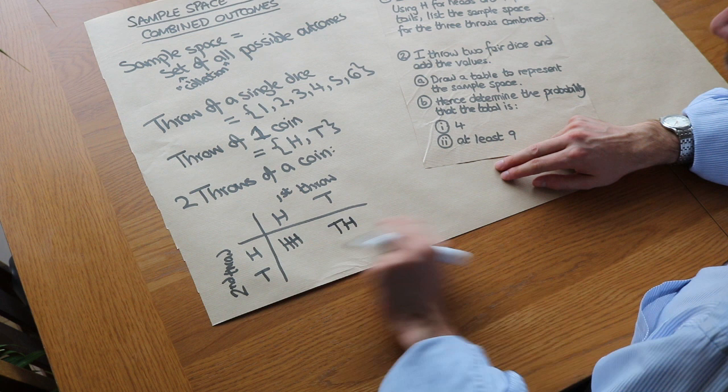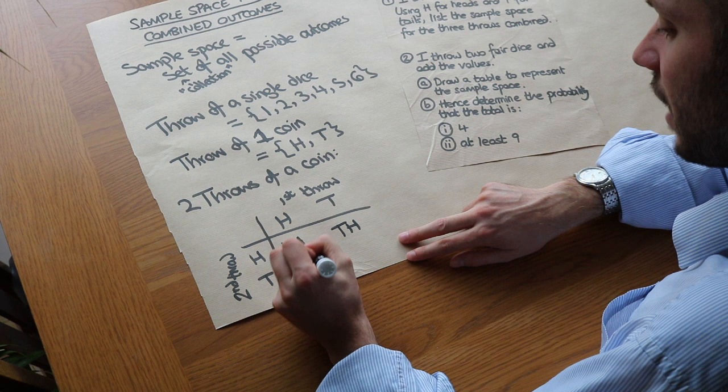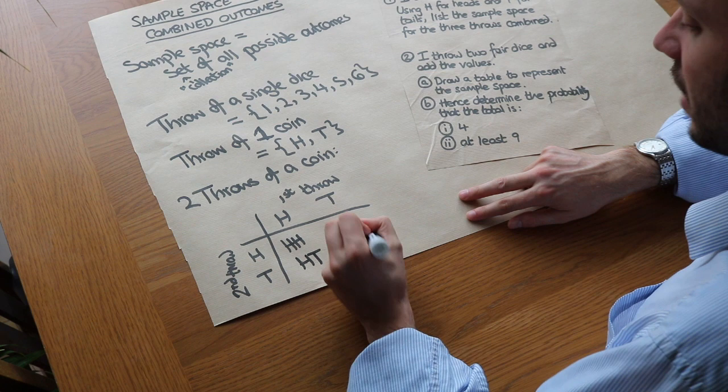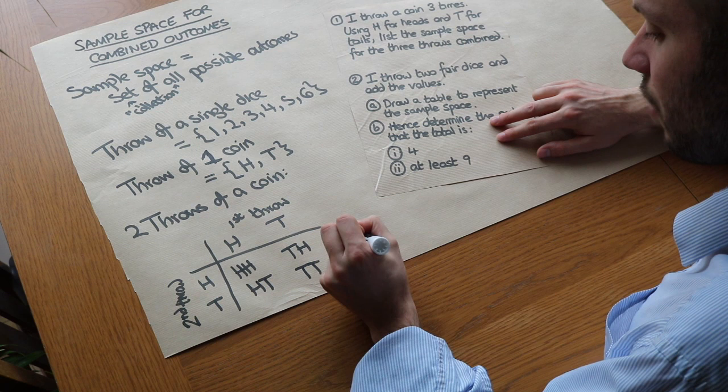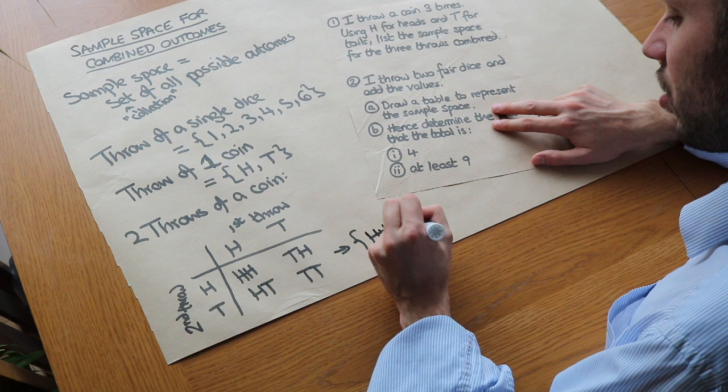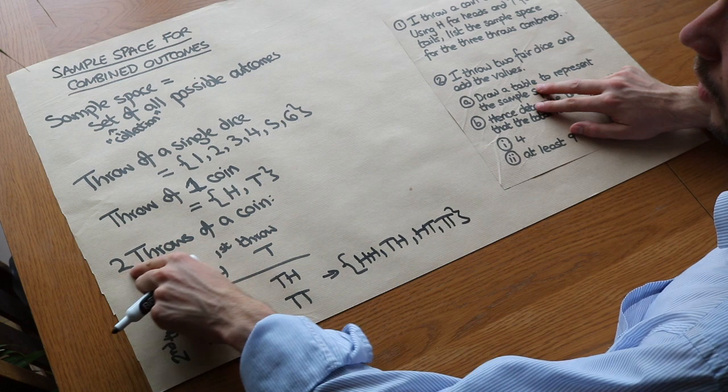This one similarly: first throw head, second throw tails, we could write that as HT. And finally if both the first and second throw were tails we could write that as TT to represent the combined outcome. But you could just write it as a single list like this. You could just write a set of HH, TH, HT and TT. And that would be the sample space for two throws of a coin. So we can see that we actually have four different combined outcomes.